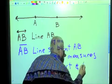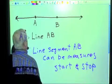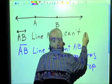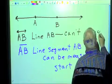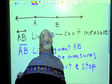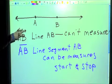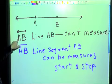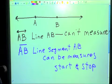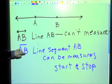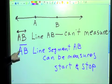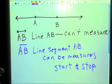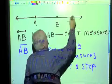A line segment has a start and stop, so we can measure it. A line cannot be measured — there's no start and stop. A line has points A and B on it to help describe where it is, but it does not end. A line segment is a piece of a line that starts at point A and ends at point B.